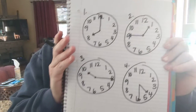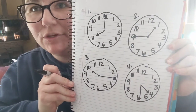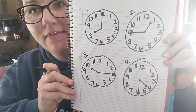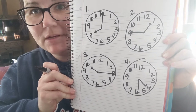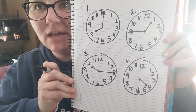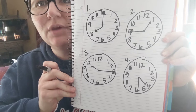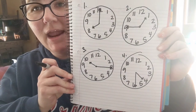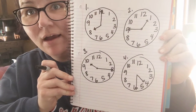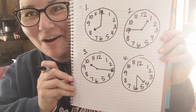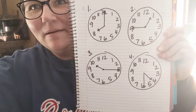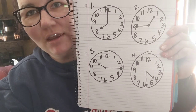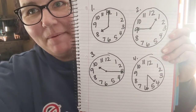Here we go. These are the times that you need to write down. Write 1 and then what time it is, 2 what time it is, 3 what time it is, and 4 what time it is. Pause the video now so you can work on these times. I want you to know I love you so much, and I'll see you tomorrow. Have a good day, but make sure you press pause so that you can catch all the times. Bye-bye, guys.